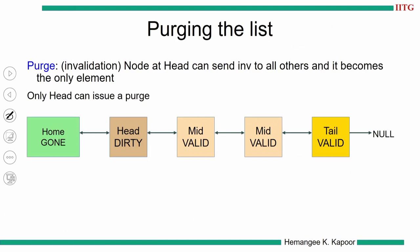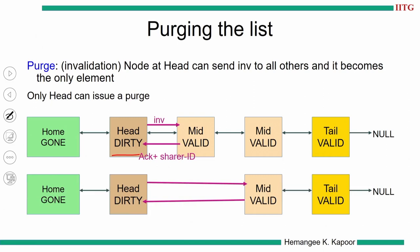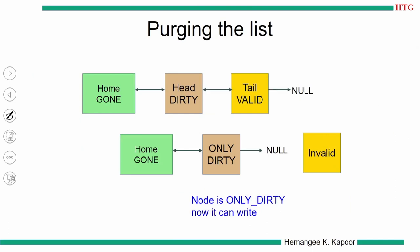A quick example of purging the list: if the node is at the head and the home state is gone, we simply send an invalidation message. That node comes out and we connect to the next node, keeping on removing all nodes. Our objective is to start writing, and we can only write when we become the only dirty node. Right now we are still in head dirty state because there are more nodes. We need to delete them before writing. Eventually the tail node is removed and we get the status of only dirty. Why only dirty? Because home is in the gone state. So: purge the list, become only dirty, start writing.